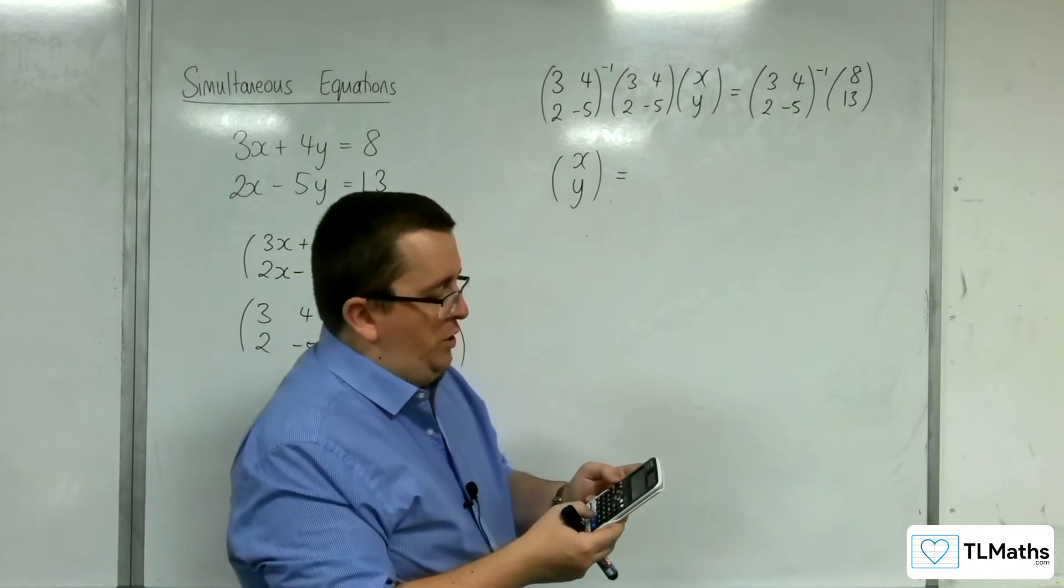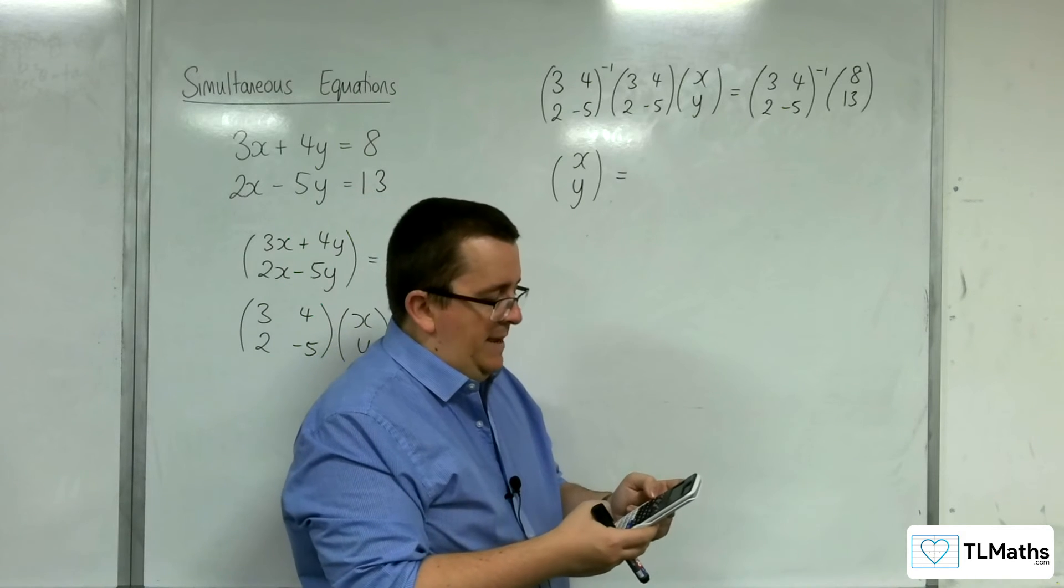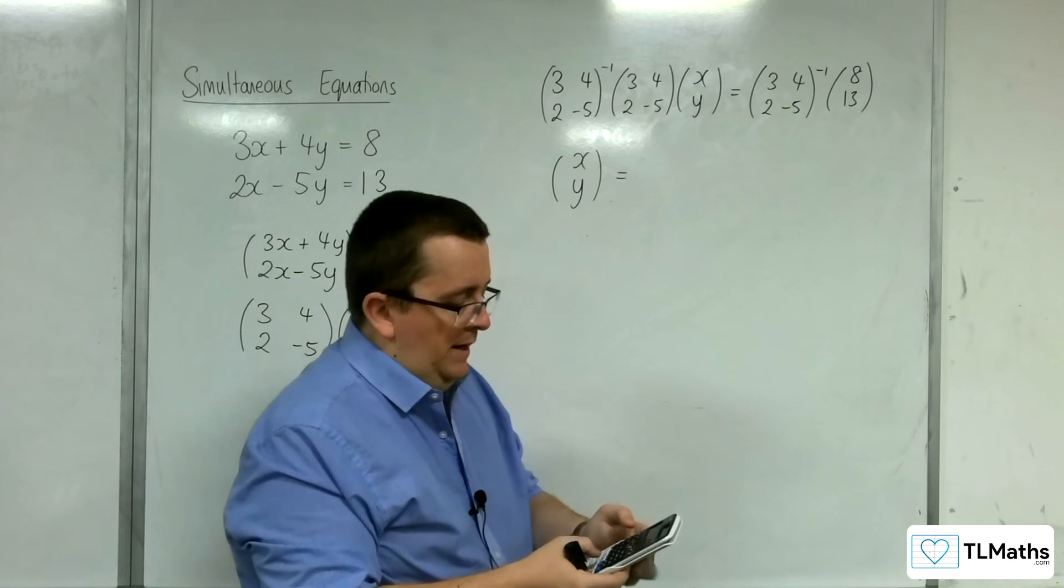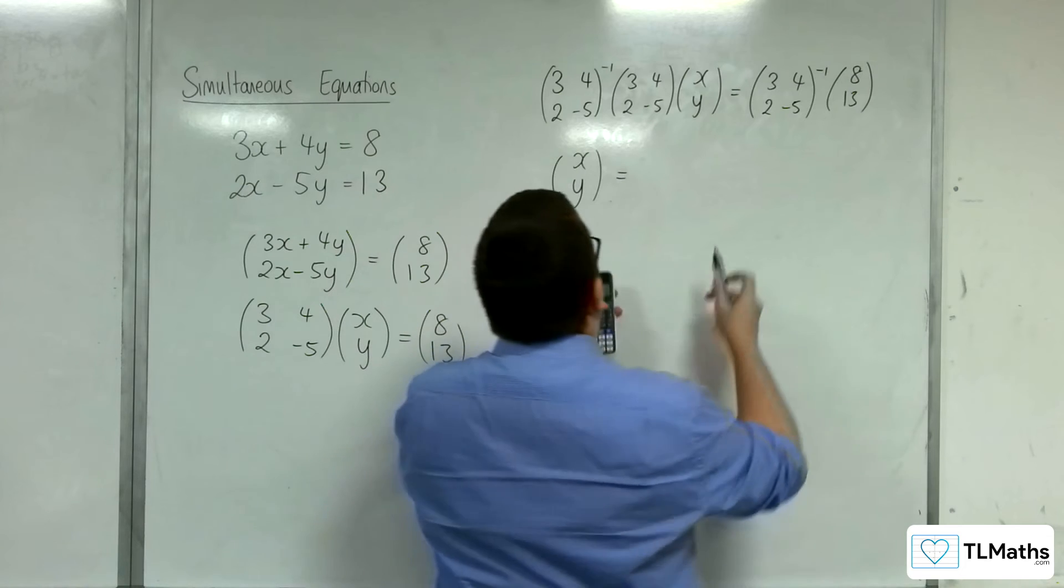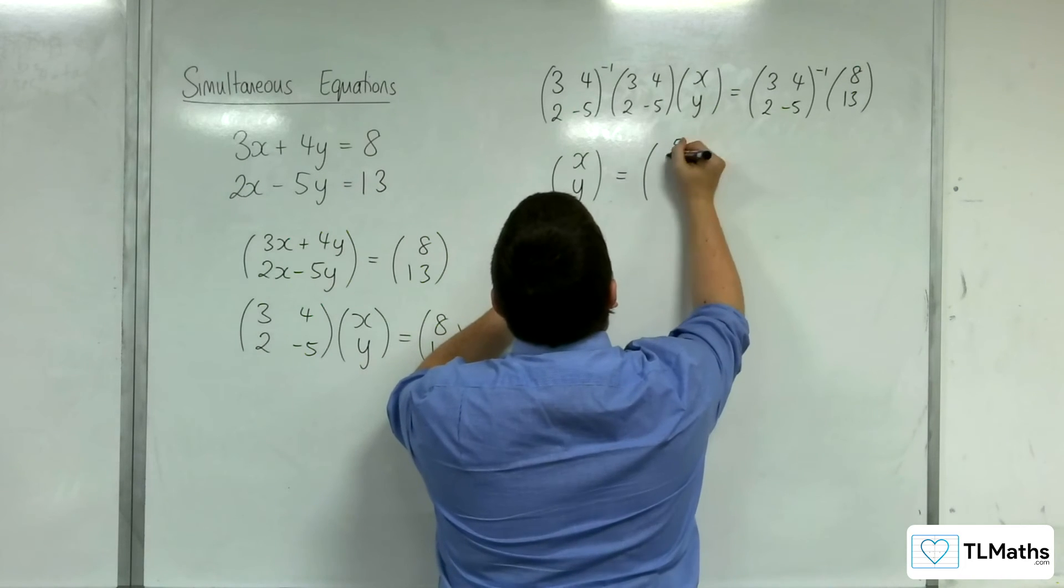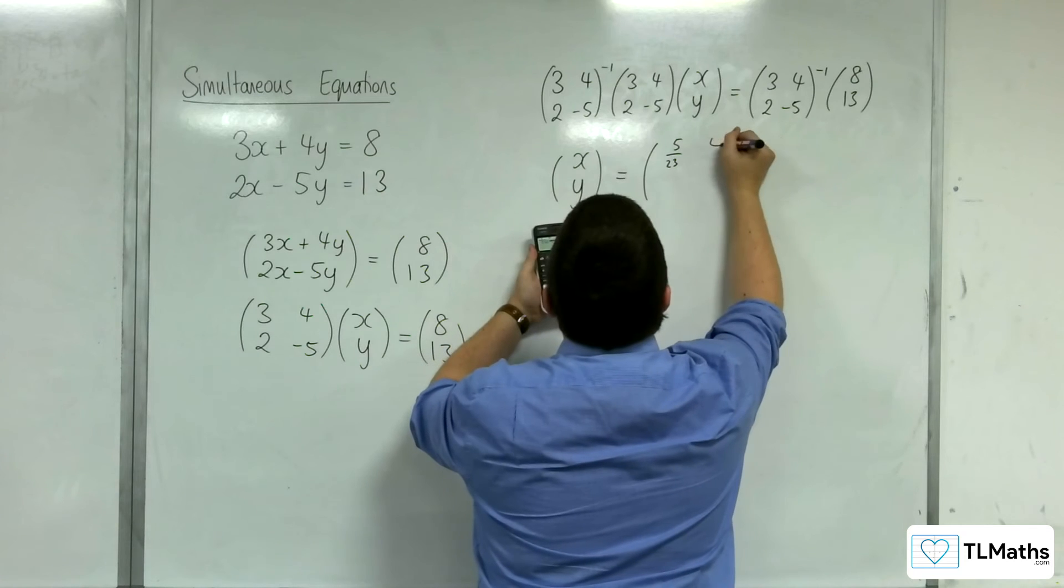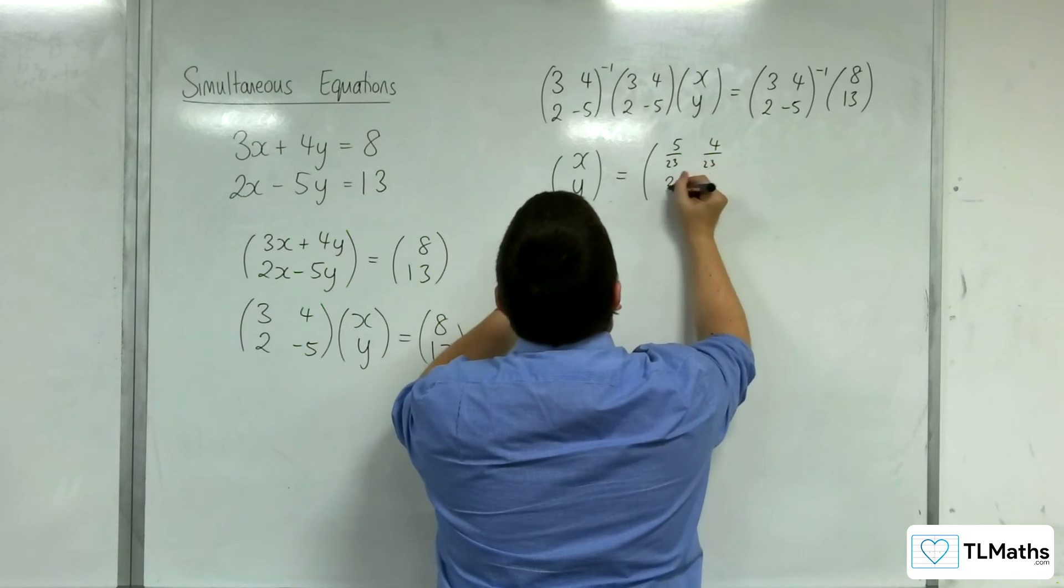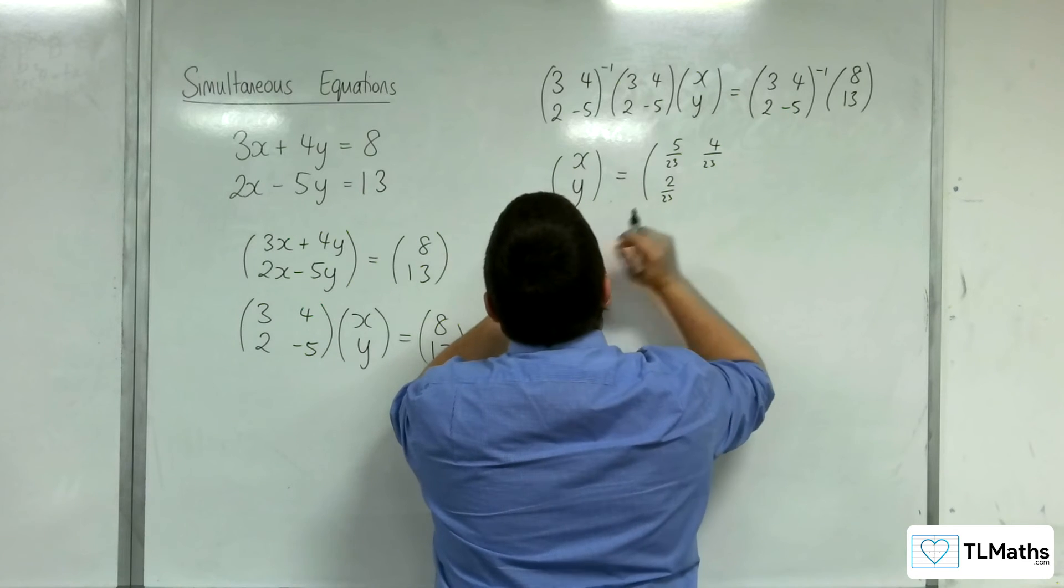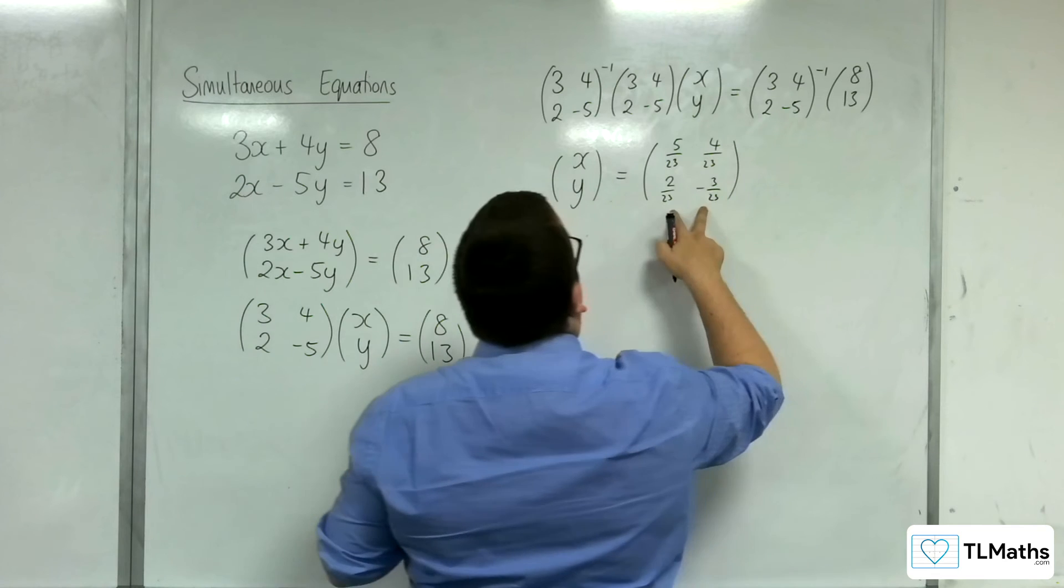Then we're going to go to option, matrix calculation. Choose matrix A. We're going back into option. And then press the x to the minus 1 button. And you should get the matrix 5 over 23, 4 over 23. We've got 2 over 23 and minus 3 over 23. So that's the inverse matrix there.